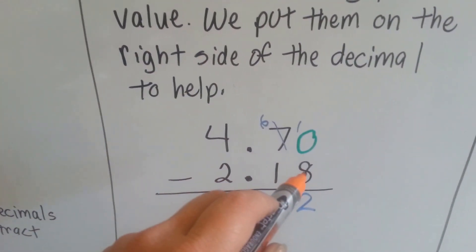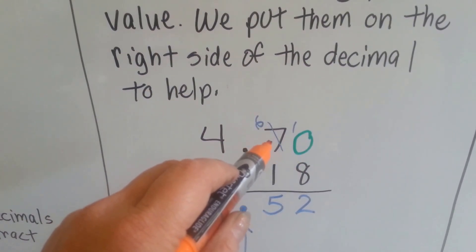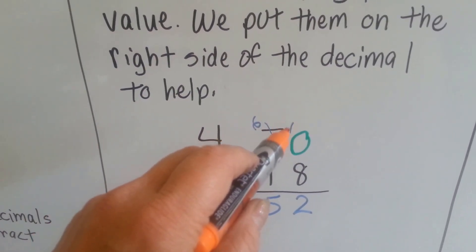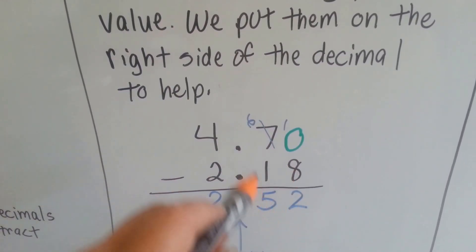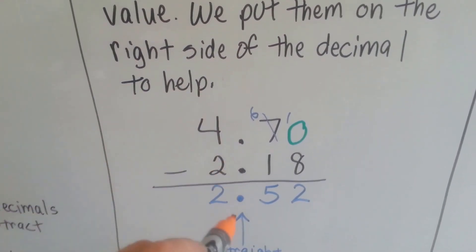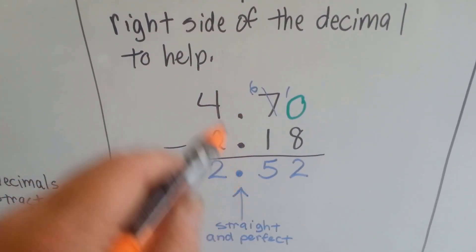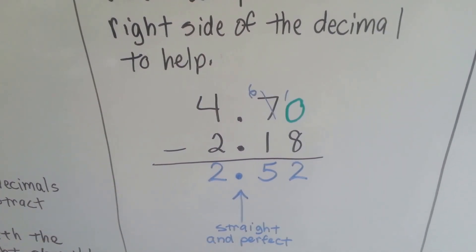We can't have 8 from 0, so we borrowed from the tenths place. It became a 6. We gave the 1 to the hundredths place. And now we have 10 take away 8, which is 2. 6 take away 1 is 5. Our decimals are all straight and perfect. And 4 take away 2 is 2. And our answer is 2 and 52 hundredths.